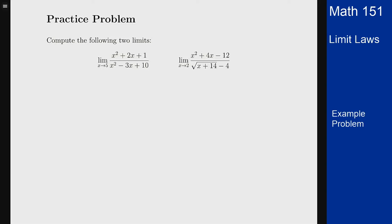In this example we want to evaluate two limits. The first is the limit as x goes to 5 of (x² + 2x + 1) / (x² - 3x + 10), and the second is the limit as x goes to 2 of (x² + 4x - 12) / (√(x + 14) - 4).